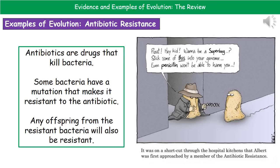The second example of evolution is antibiotic resistance in bacteria. Antibiotics are drugs used to kill bacteria, but some bacteria have a mutation that makes them resistant to the antibiotic, so they won't be killed by it. Any offspring from that resistant bacteria will inherit that gene and will also be resistant. We have a clear example of this in the fact that we are seeing more and more bacteria becoming resistant to our antibiotics as time goes on.